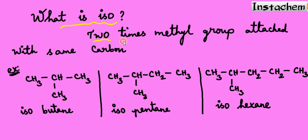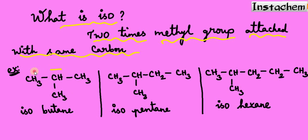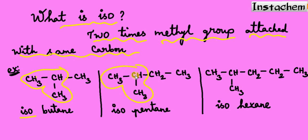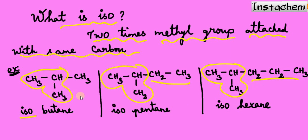Now let's move to the next topic: what is 'iso'? Iso means two methyl groups attached to the same carbon — that is very important. A single carbon contains two methyl groups. Let's see the first example: one carbon is linked with two methyl groups. Whenever two methyl groups are attached to the same carbon, we can use the term 'iso'. Look at another example — one methyl group on the left, one methyl group on the right, both attached to the same carbon.